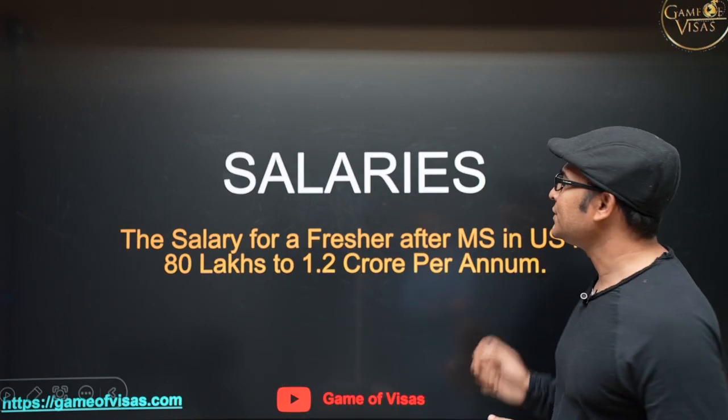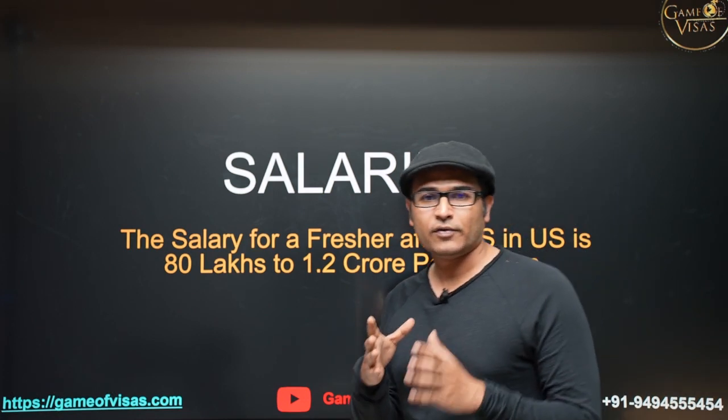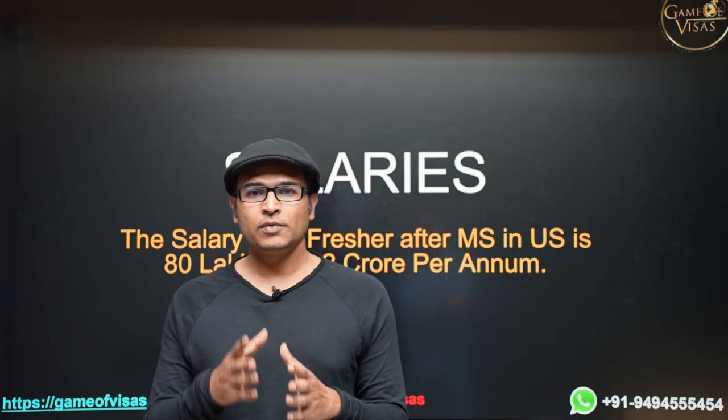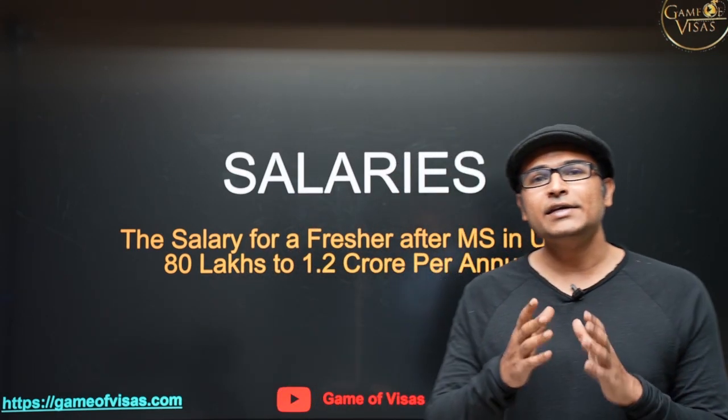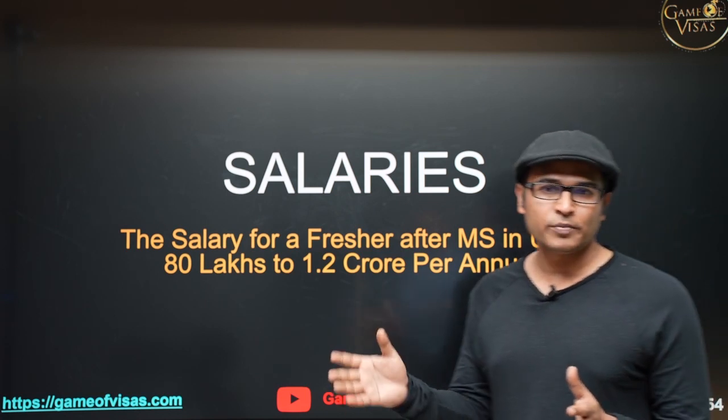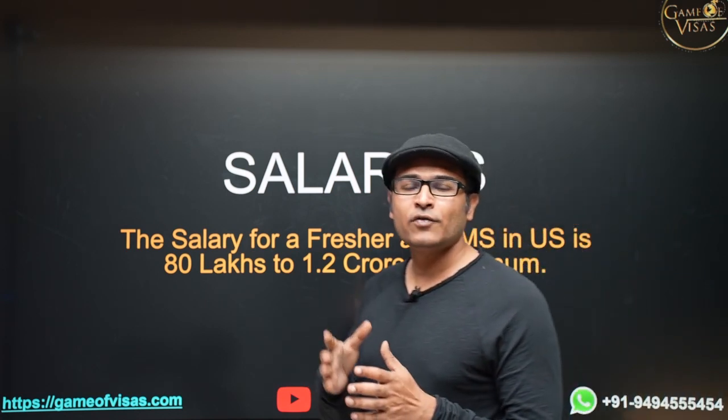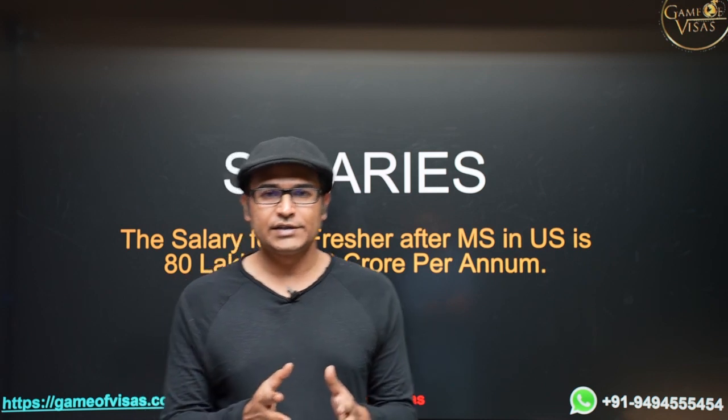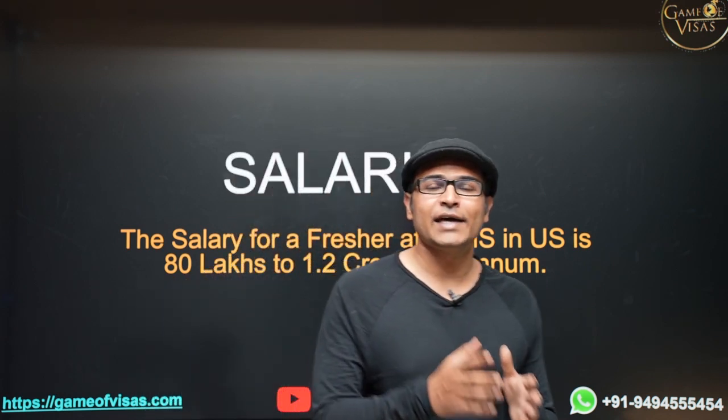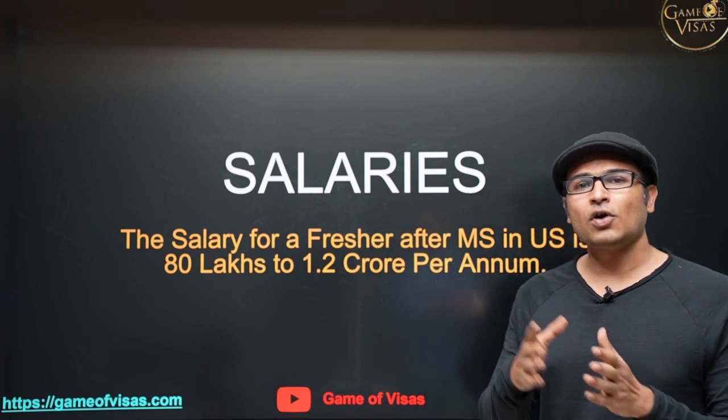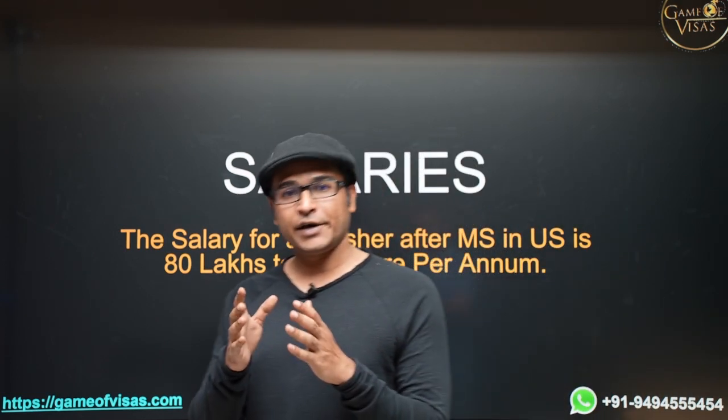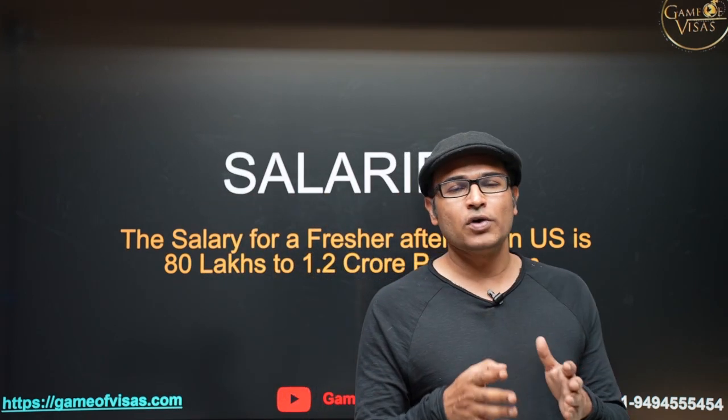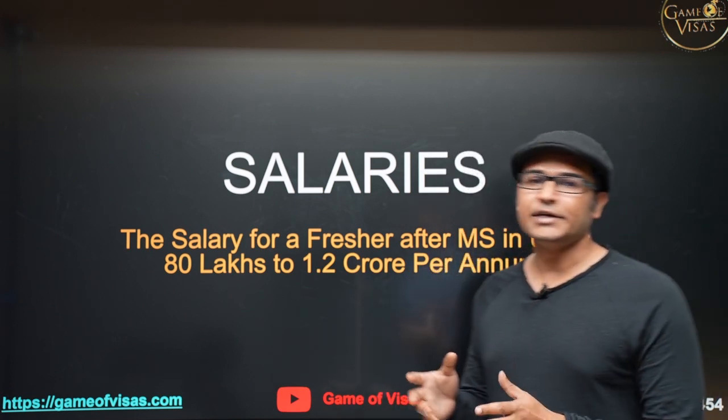Looking at the salaries for computer science - if you have done your masters in computer science in the US, the salaries are ranging from 80 lakhs per year to 1.2 crore per year. Even if you take an average of 1 crore per year, your savings will be much higher. After taxes and your cost of living, you can easily save 40 to 50 lakhs per year. In India, the maximum jobs that you get is around 30 lakhs, so your savings will be much greater than the salaries in India.